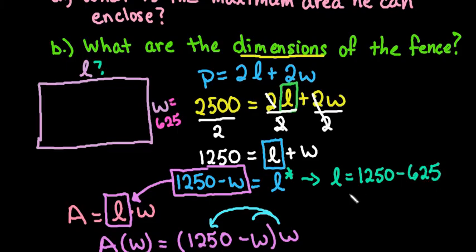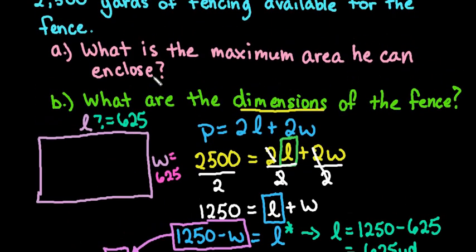And we can actually see that this gives us 625 yards also. So if you notice from this, whenever you have, or whenever you are looking for the maximum area, the maximum area of a rectangle is always going to be when it is a square.